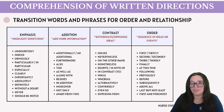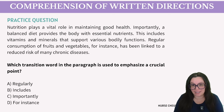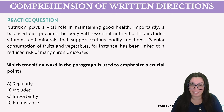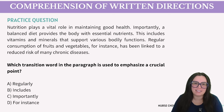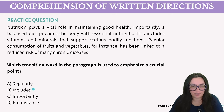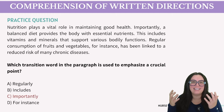Let's look at practice examples for each type. First question: 'What transition word in the paragraph is used to emphasize a crucial point?' Remember, we're looking for a word with a comma behind it. The passage: 'Nutrition plays a key role in maintaining good health. Importantly, a balanced diet provides the body with essential nutrients, including vitamins and minerals that support various bodily functions. Regular consumption of fruits and vegetables, for instance, has been linked to a reduced risk of many chronic diseases.' The only emphasis transition word with a comma is 'importantly,' making the correct answer C.